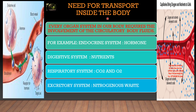Every organ system in our body requires the involvement of the circulatory body fluids. Some examples of organ systems are the endocrine system, digestive system, respiratory system, and excretory system. These organ systems all produce different types of substances.